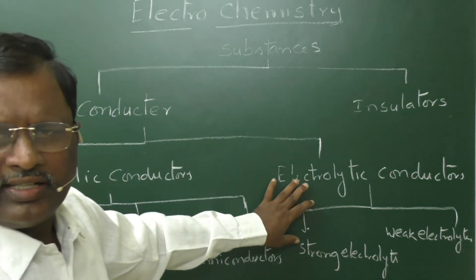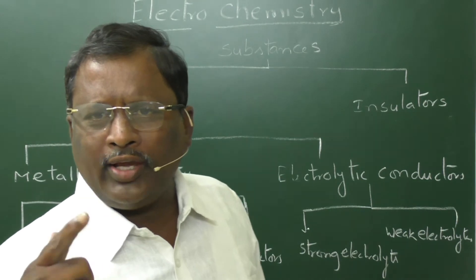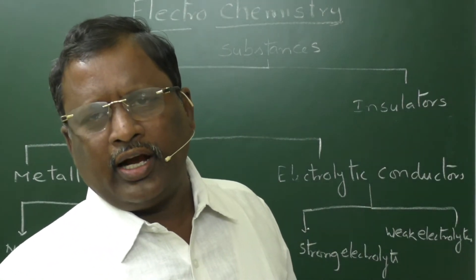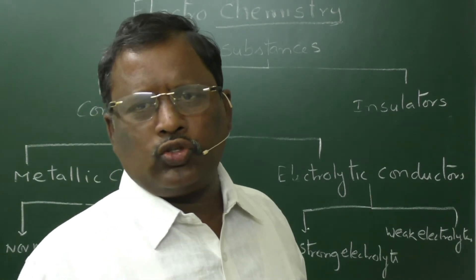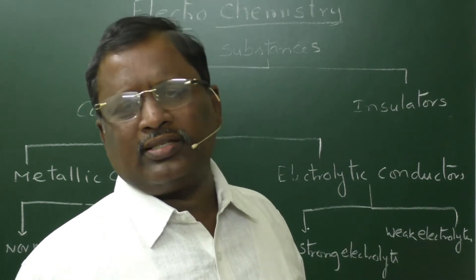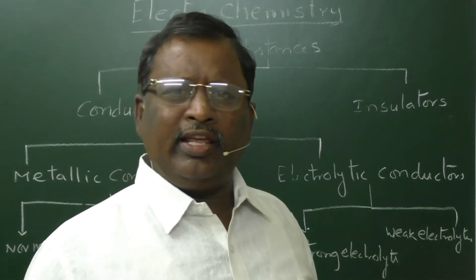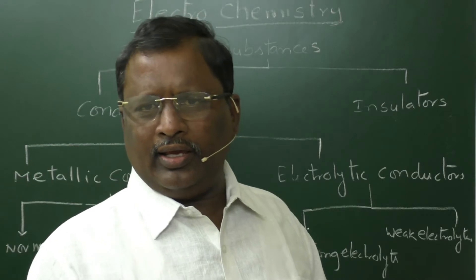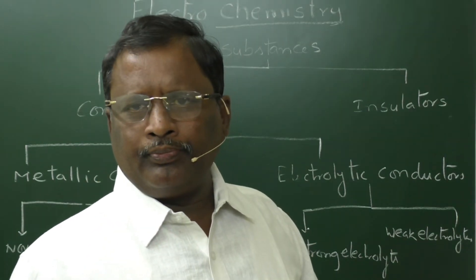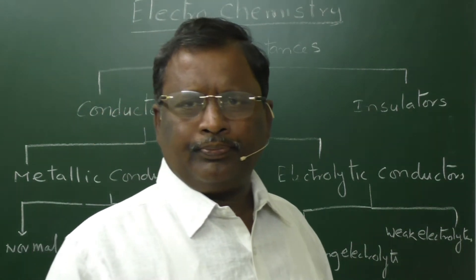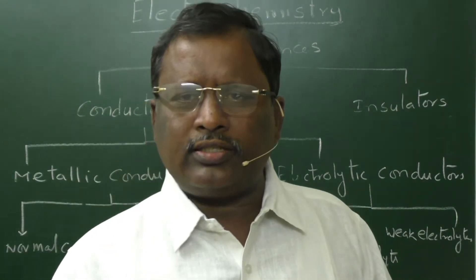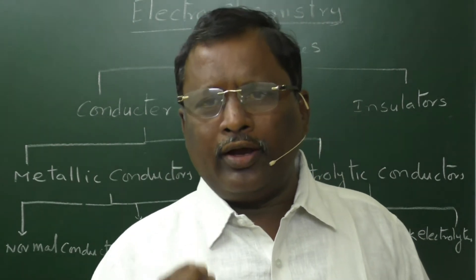Whereas electrolytic conductors are those substances which undergo a chemical change during the conductance — they are said to be electrolytic conductors. Generally, ionic substances in their fused state or in aqueous solutions will act as electrolytes. Similarly, acids and bases can also act as electrolytic conductors. Any substance in a fused state or aqueous form, if it consists of oppositely charged ions, will act as an electrolytic conductor. These electrolytic conductors conduct electricity with the help of ions, so they are also called ionic conductors.